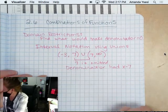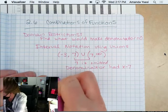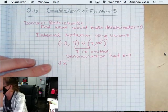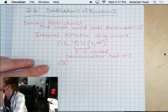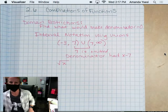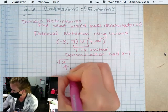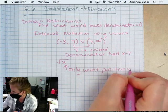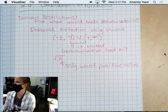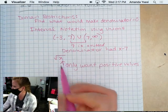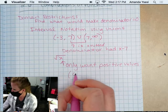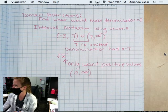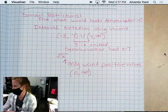Another thing that could make you use restrictions is a square root of, let's say, X. On this one, we only want positive values. So if we only want positive values, then we are going to restrict our X to be from zero to infinity. Negative values make it imaginary, so it's not a real solution.